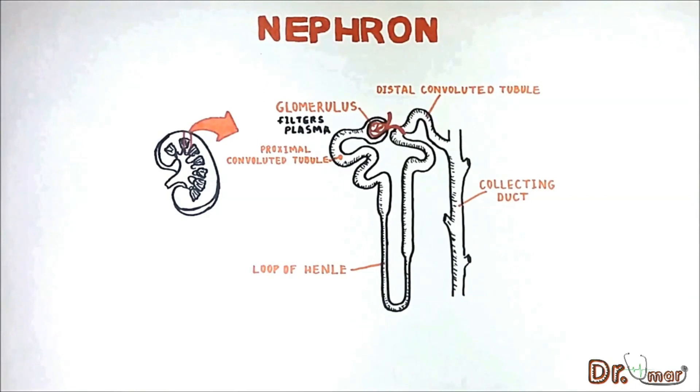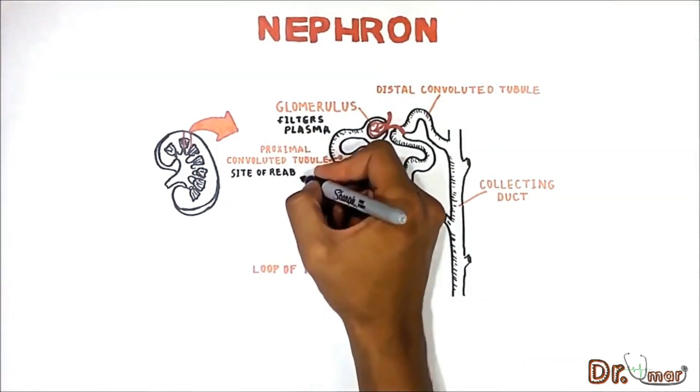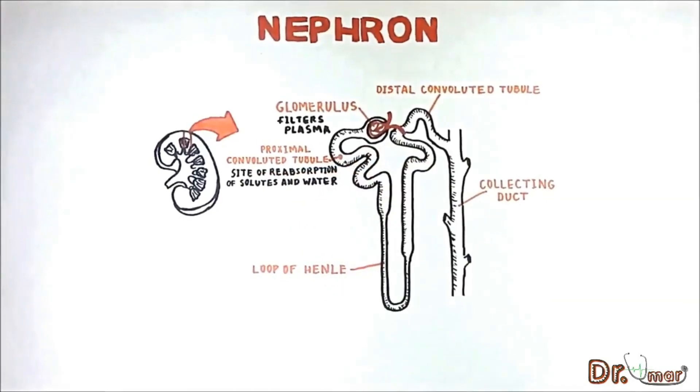The proximal convoluted tubule is the main site of reabsorption of solutes and water.